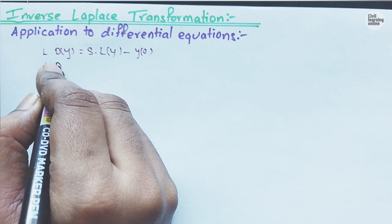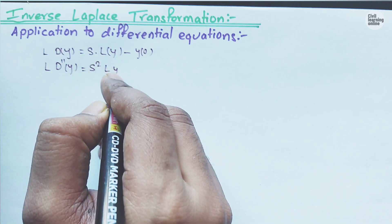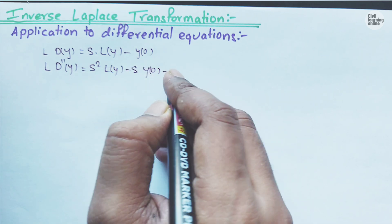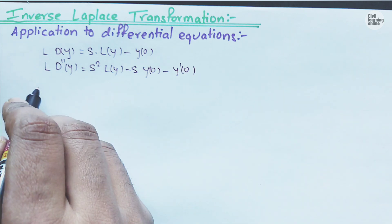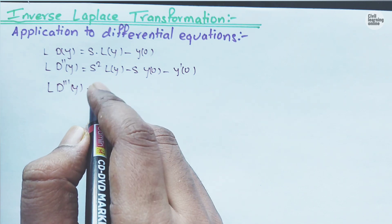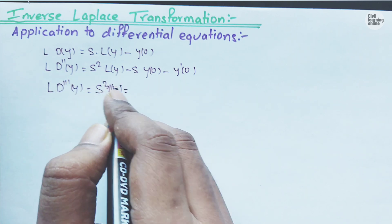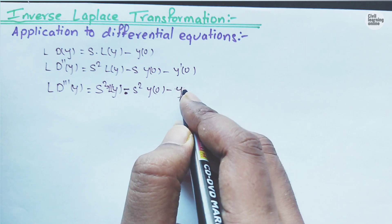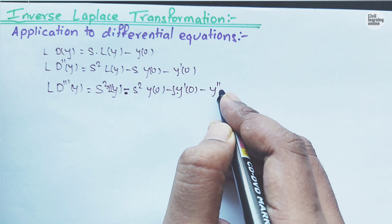If we have the second derivative y double dash, its formula will be s squared times Laplace transformation of y, minus s times y(0), minus y dash(0). Similarly, for the third derivative of y, the formula will be s cubed times Laplace transformation of y, minus s squared times y(0), minus s times y dash(0), minus y double dash(0).